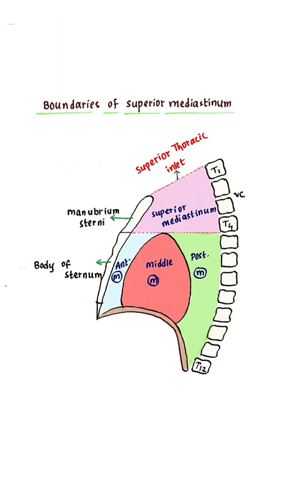Boundaries of Superior Mediastinum: Anteriorly, the Manubrium Sternum. Posteriorly, the body of the upper 4 Thoracic Vertebrae. Superiorly, the Superior Thoracic Inlet. Inferiorly, an imaginary plane joining the Sternal Angle anteriorly and the disc between T4 and T5 Vertebra posteriorly.